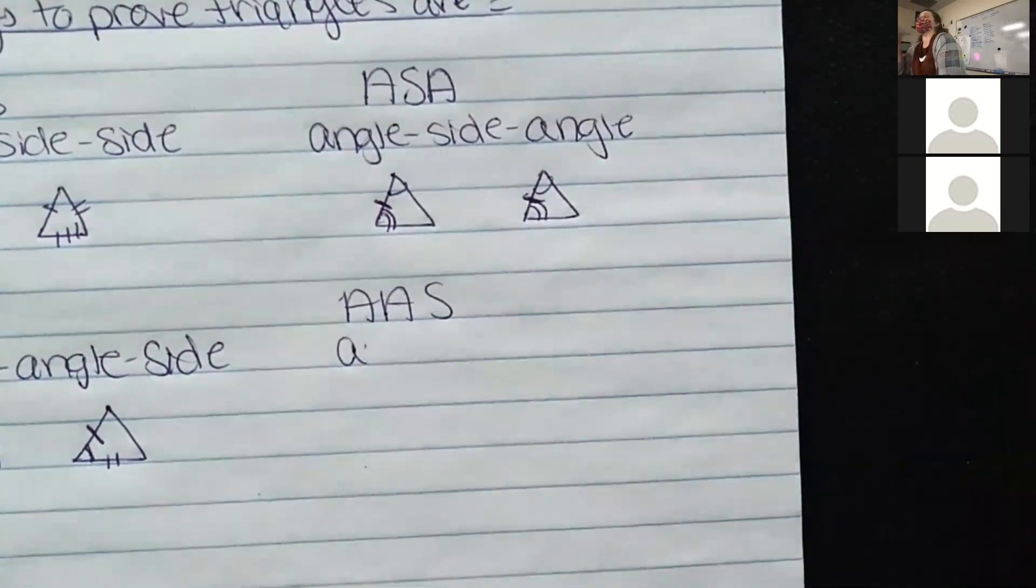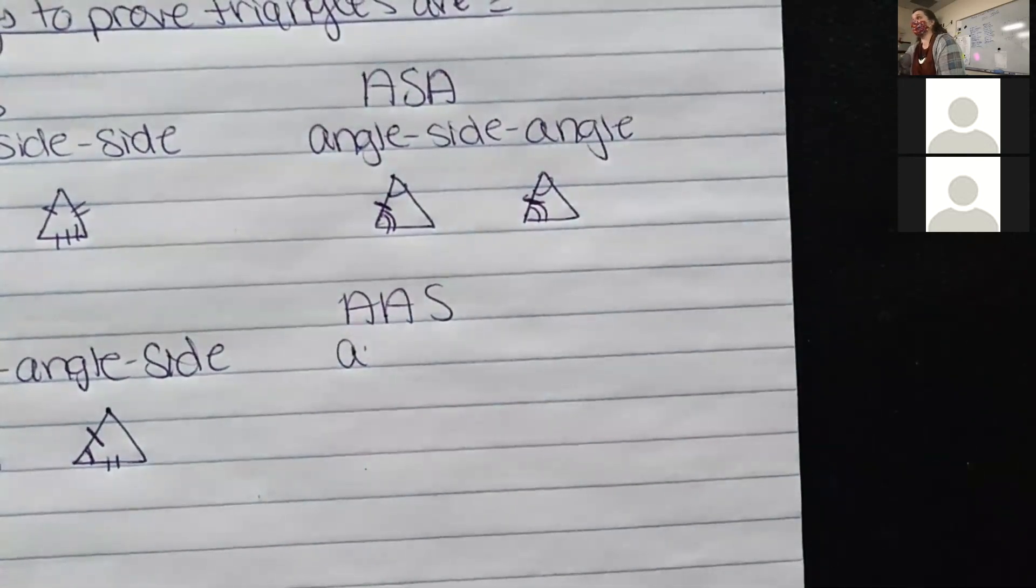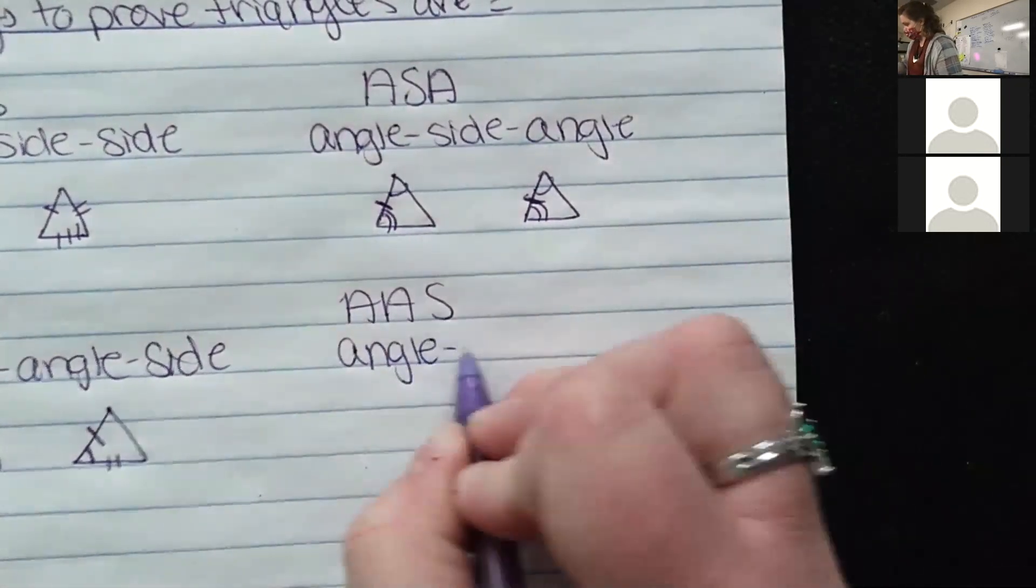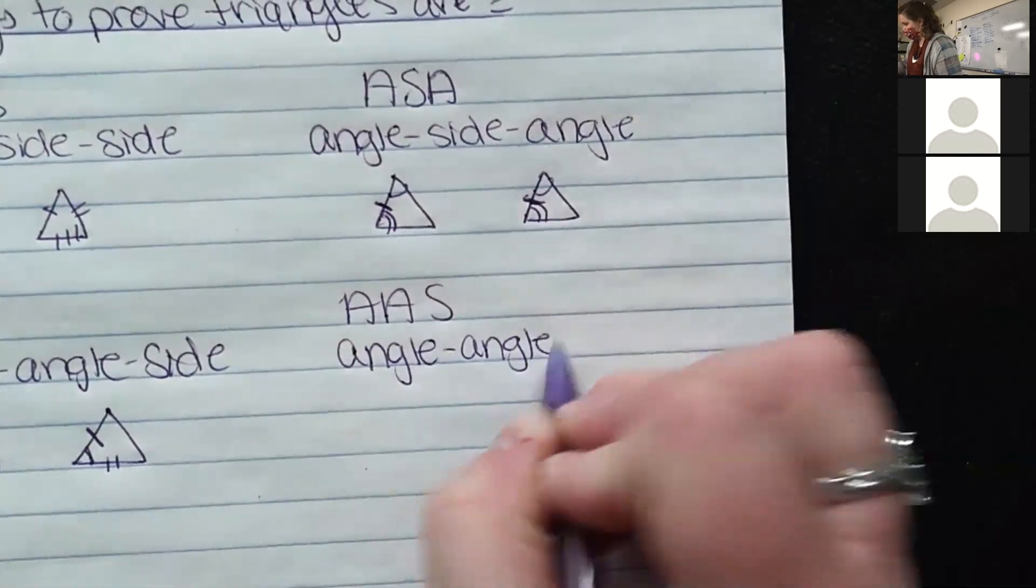Angle-angle-angle is not a congruency, but we'll get into angle-angle is a similarity. So that's a great question. We'll get into that one. Angle-angle-side.